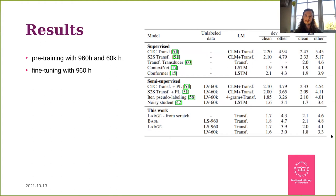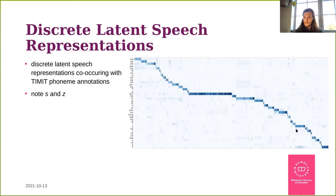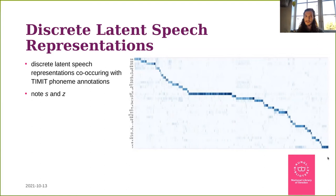Looking at what the model learns: the latent speech representations made discrete through quantization do co-occur with certain phonemes when tested on a different dataset. For example, representations active for the voiceless alveolar fricative 's' are also active for the voiced counterpart 'z', and vice versa. These representations really seem to map to actual speech sounds — the actual phonemes.